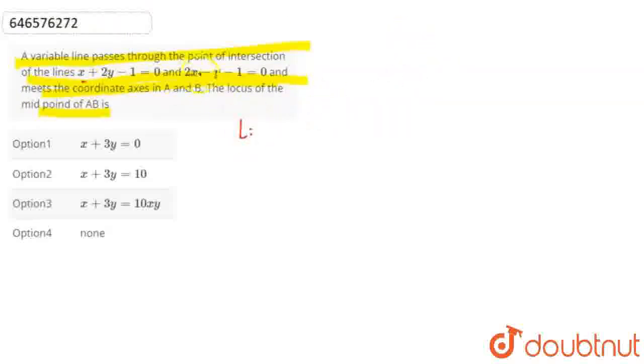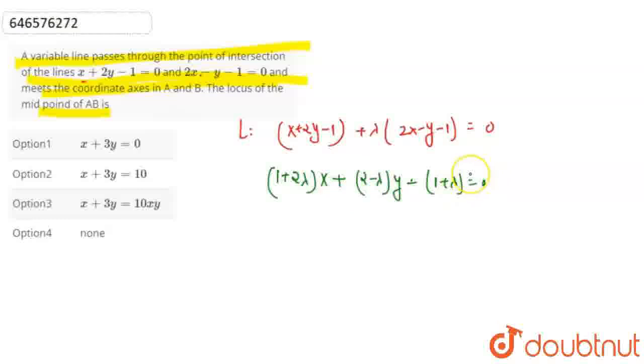the line be: this line plus lambda times this line. That is, x plus 2y minus 1 plus lambda times 2x minus y minus 1 equals 0. Which becomes 1 plus 2 lambda times x plus 2 minus lambda times y minus 1 plus lambda equals 0.